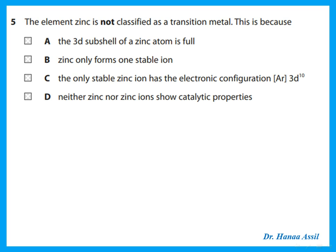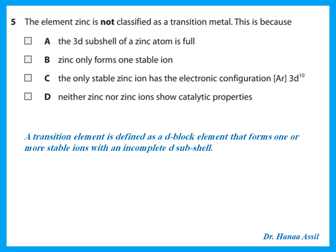Zinc is not classified as a transition metal. The definition of a transition metal in the syllabus is a D-block element that forms one or more stable ions with an incomplete D sub-level. Zinc has the electronic structure 3d¹⁰ 4s². The only stable ion it forms is Zn²⁺. When forming the ion, electrons are lost from the 4s first. For Zn²⁺ we lose the two 4s electrons, but the 3d remains full — 3d¹⁰. So zinc is not a transition metal because its only stable ion has a complete D sub-level.